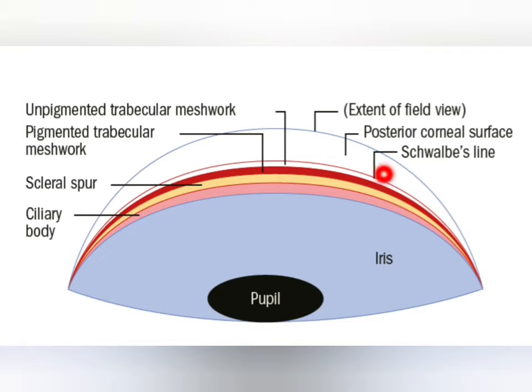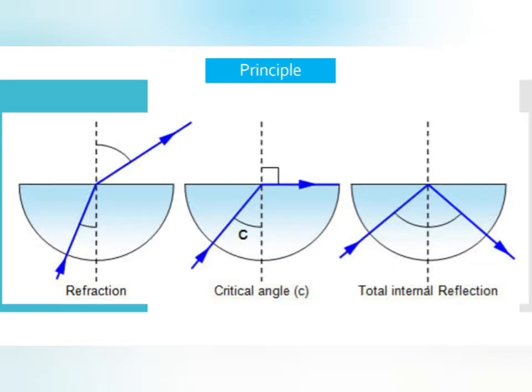This is a diagrammatic picture of the anterior chamber angle structure. Going from anterior to posterior: anteriorly it starts from Schwalbe's line, then the trabecular meshwork, which is divided into two parts — non-pigmented (anterior trabecular meshwork) and pigmented (posterior trabecular meshwork) — then the scleral spur, then the ciliary body band, and then the iris. This is based on the principle of total internal reflection.